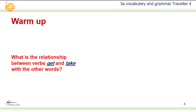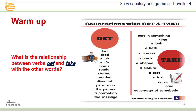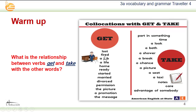What is the relationship between verbs get and take with other verbs? For example, we have: get lost, get fired, get a job, get a life, get home, get ready, get started, get married, get divorced, get permission, get the picture, get a promotion, get the message.